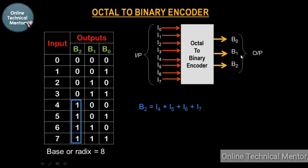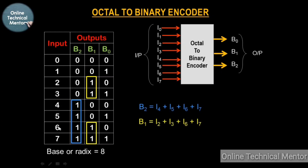Similarly, for the B1 output, look at the yellow boxes — when the input is 2, 3, 6, or 7, B1 becomes 1. So I have written: B1 = I2 OR I3 OR I6 OR I7. When any one of the four inputs I2, I3, I6, or I7 becomes high, B1 will become high.